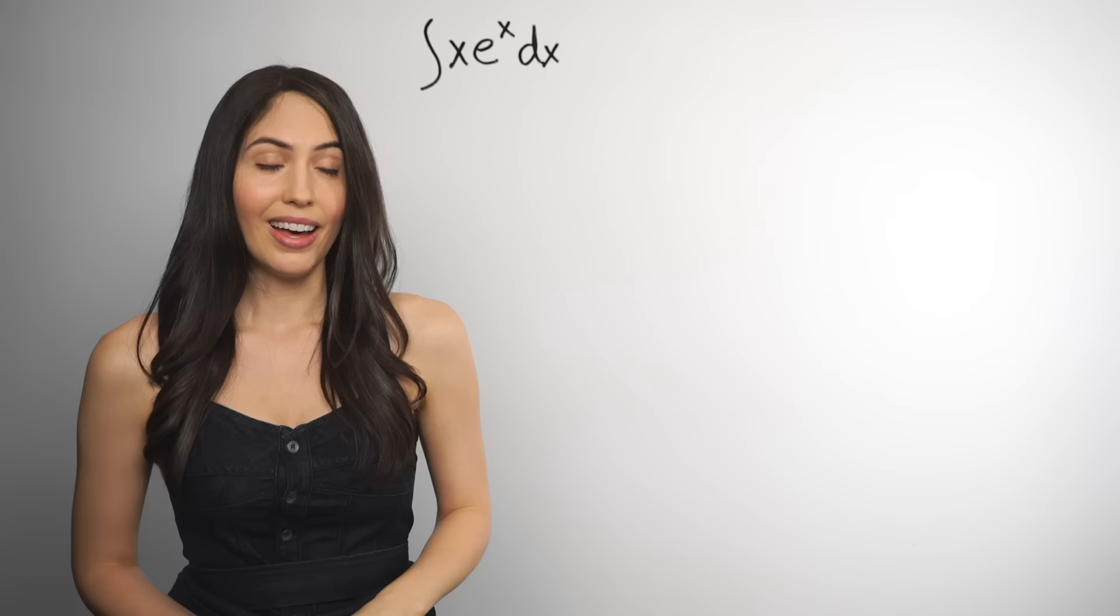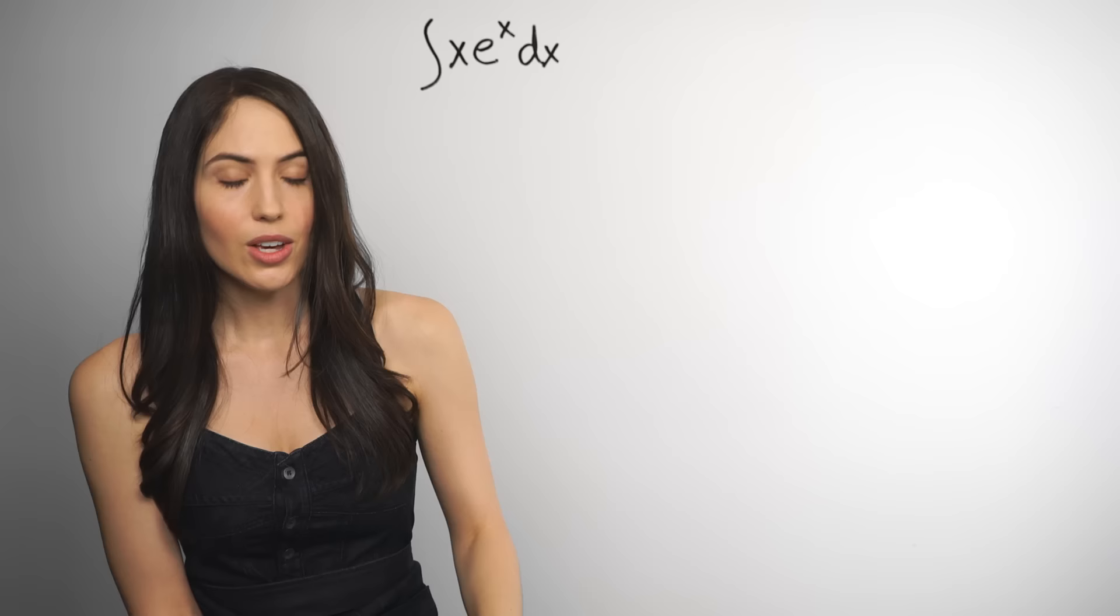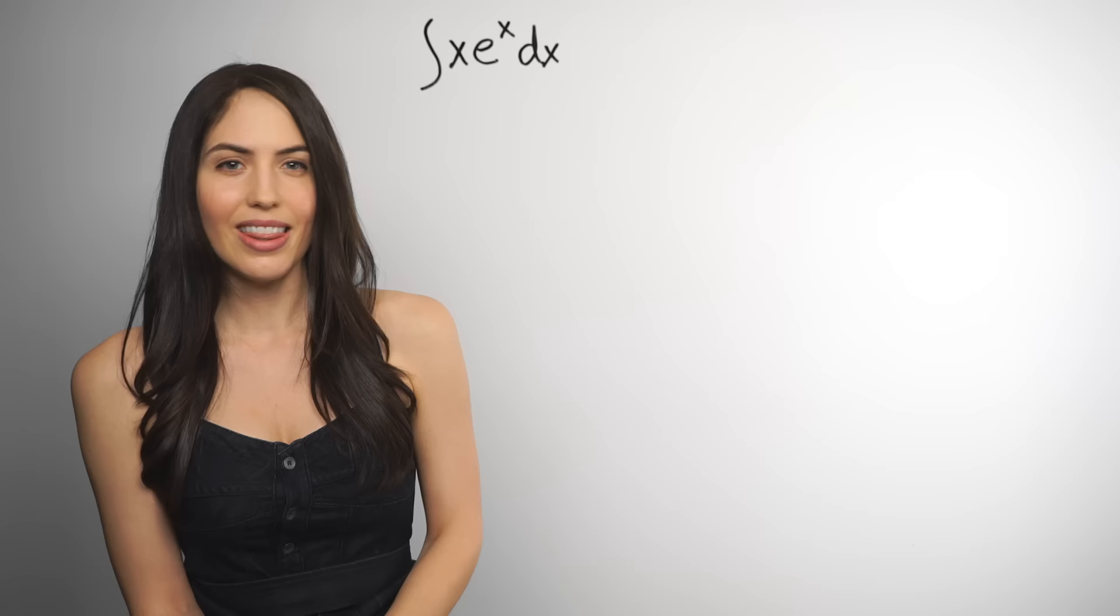I don't. I mean, if this were just integral of x dx, you could do that easily. If it were just integral of e to the x dx, you could do that with the basic integration rules, which hopefully you've learned already. But it's not that. We have the two of them multiplied together. We have this product here, which makes it trickier.